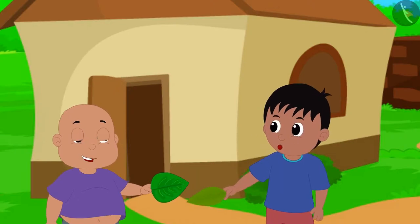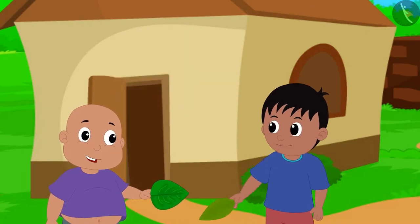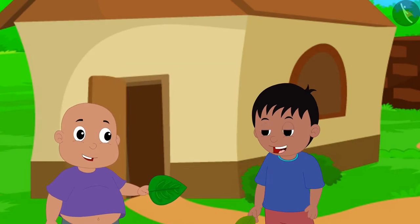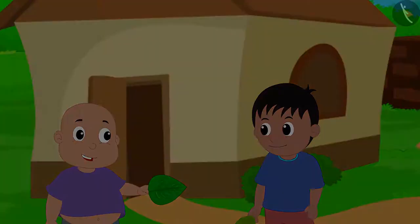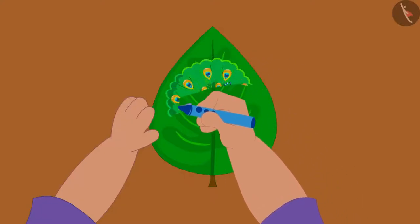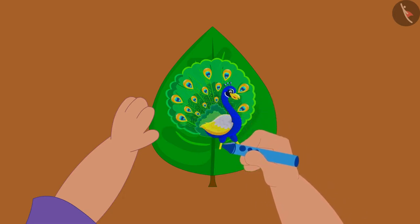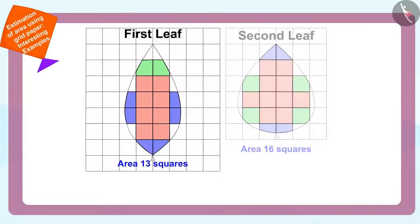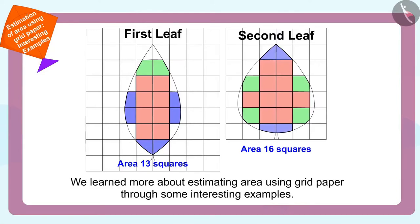Now, let us quickly take part in the competition by painting a beautiful picture on this bigger leaf. The two friends made a beautiful painting on the second leaf. Till then, in this video, we learned more about estimating area using grid paper through some interesting examples. In the next video, we will look at some of the misconceptions related to this.